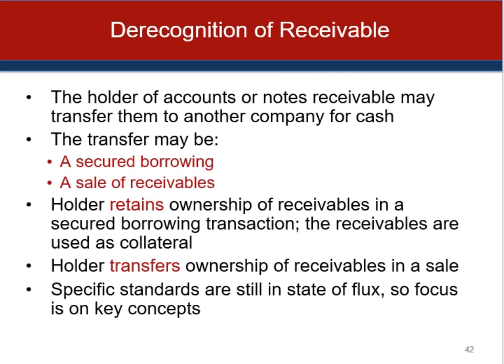To accelerate the receipt of cash, companies may transfer accounts or notes receivable to another company for cash. Companies wishing to avoid the 30-to-60-day collection period may generate cash immediately by selling or factoring their accounts receivable. Factoring is an outright sale of the receivables to a finance company or bank. When factored or sold, the arrangement can be either with recourse or without recourse. If receivables are factored on a with recourse basis, the seller guarantees payment to the factor if the debtor does not pay. Without recourse, the factor assumes the risk of collectability and absorbs any credit losses.